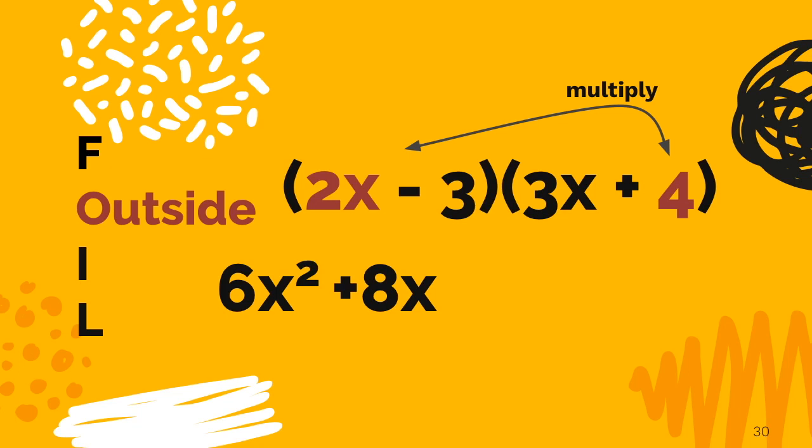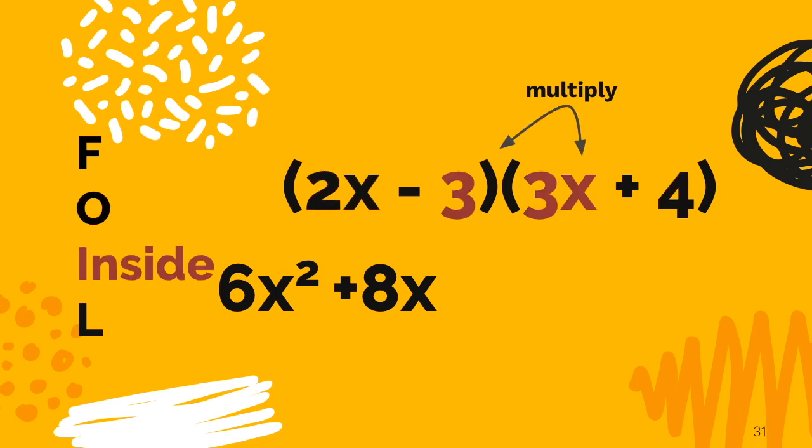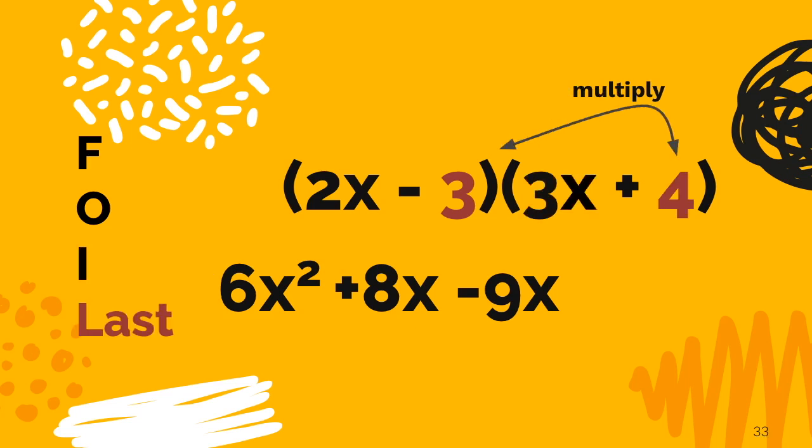Let's move on to the inside. Here we need to multiply negative 3 times positive 3x. That would be negative 9x. Let's move on to the last. Here we need to take negative 3 and multiply it by positive 4. That gives us negative 12.